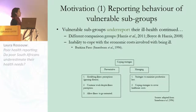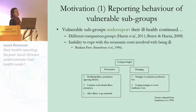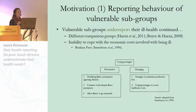Why would vulnerable subgroups underestimate their ill health? One possible reason is differences in comparison groups. When you take the poor as a subgroup, they compare themselves to their peers and their environment — their neighbours and family. When comparing yourself to a group that starts off with a relatively low level of health, you might see yourself as better off than when comparing to someone from a more affluent suburb.